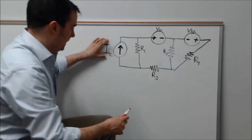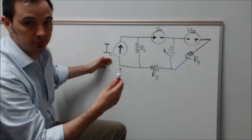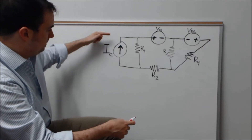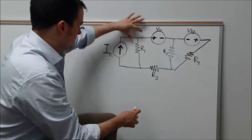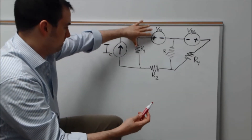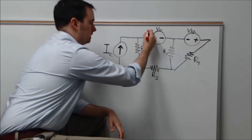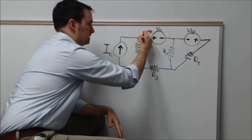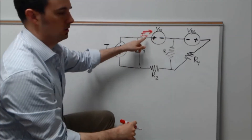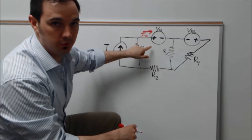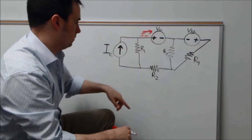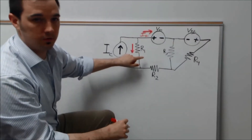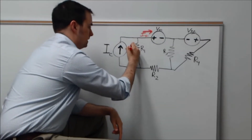The first thing I look at is recognizing currents. I have a current source with a direction facing up, so I imagine this current flowing here and branching off. I'm going to define a current flow here, which I'll call IS1, because that correlates with the current flowing across this voltage source VS1. Then I have another current flowing down through resistor R1, and I'll also call that IS1.